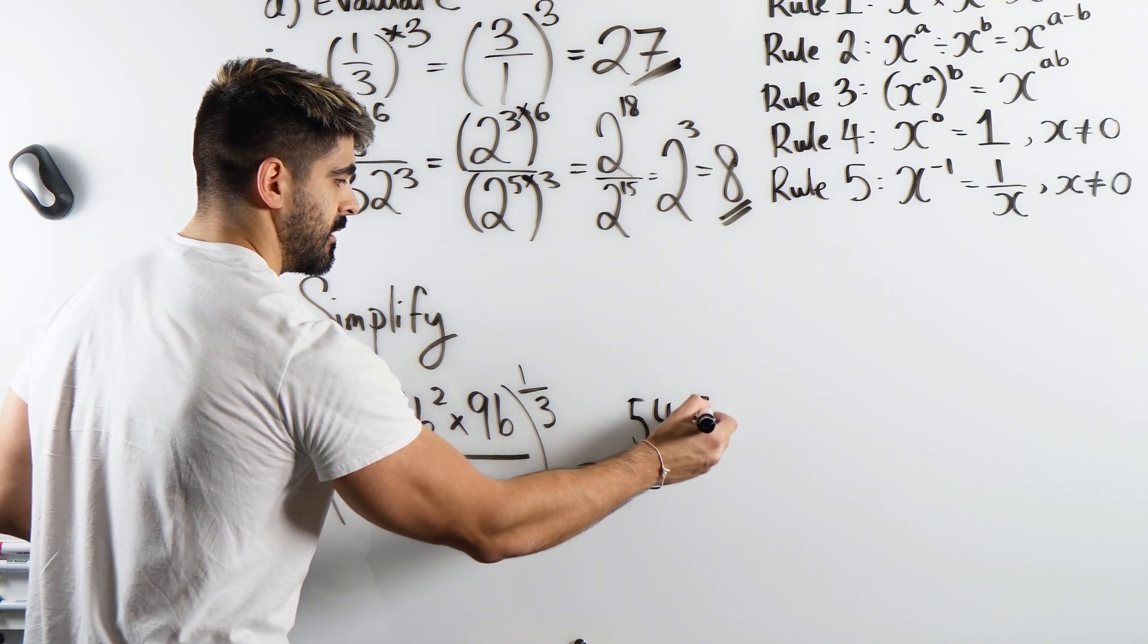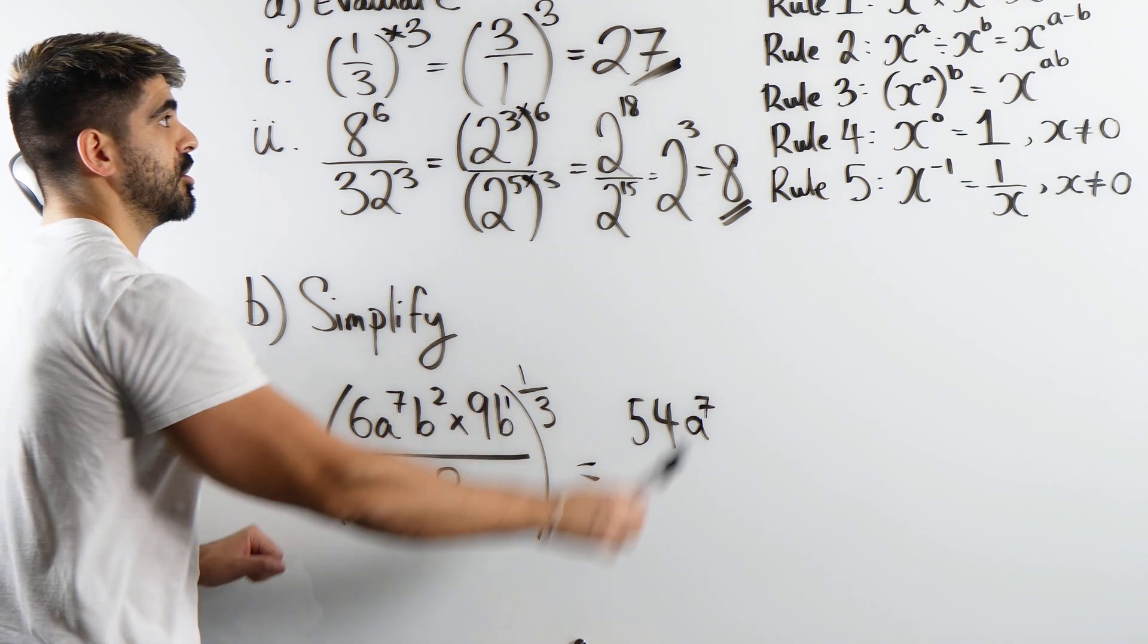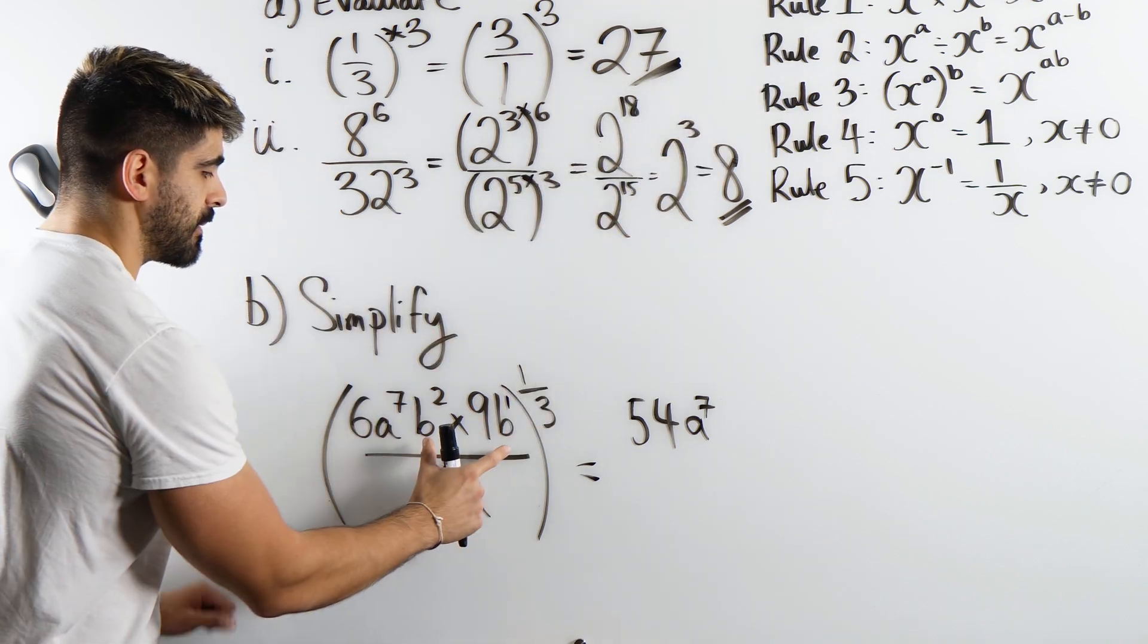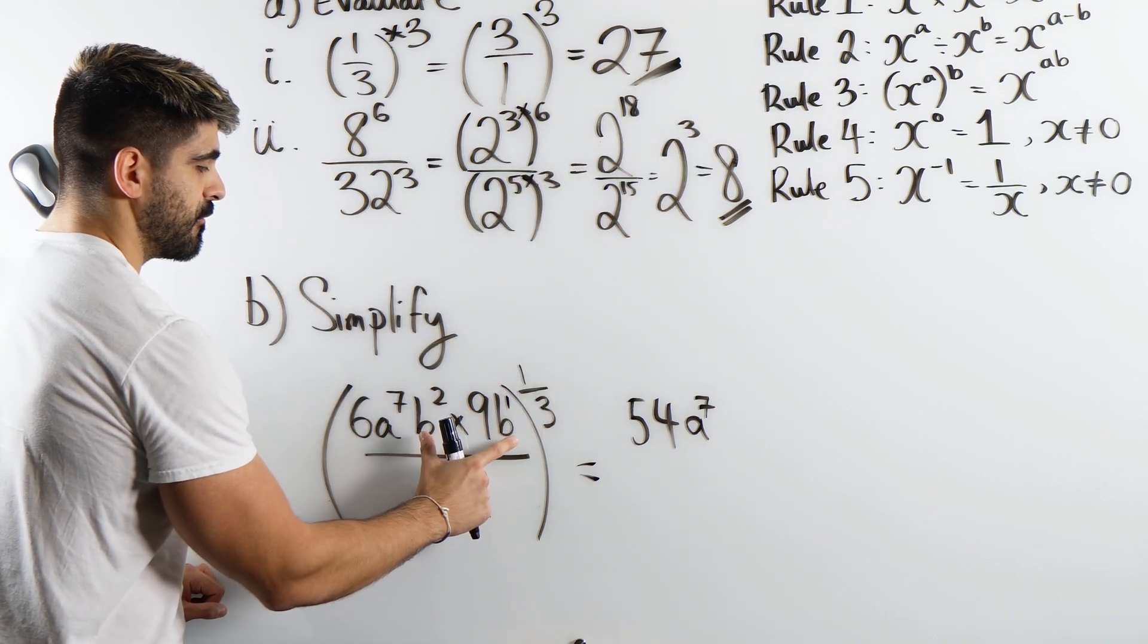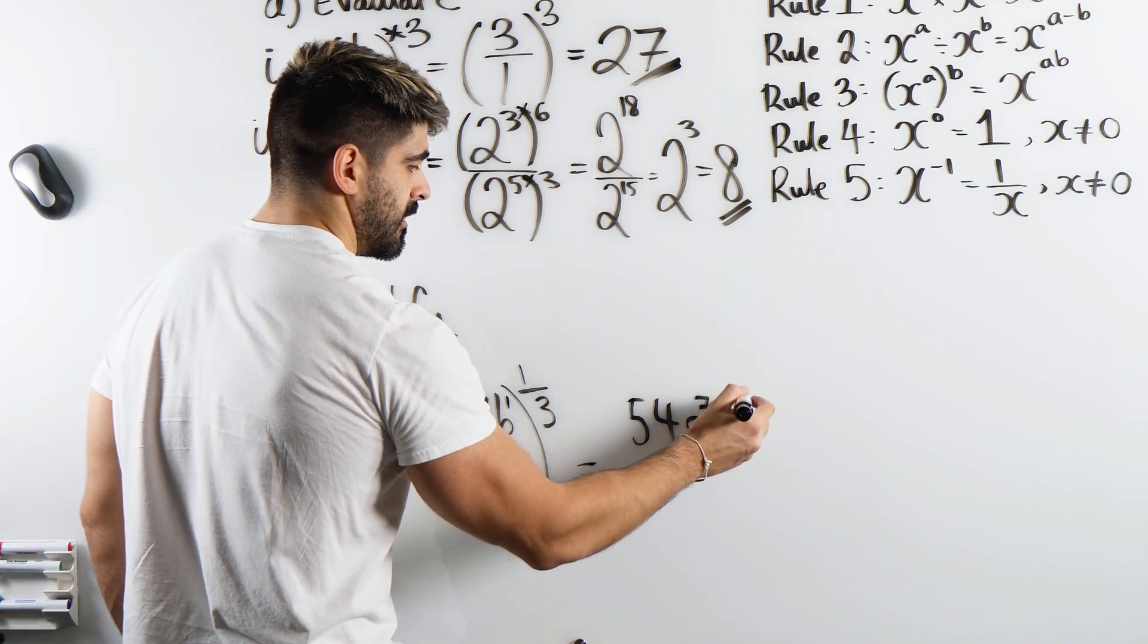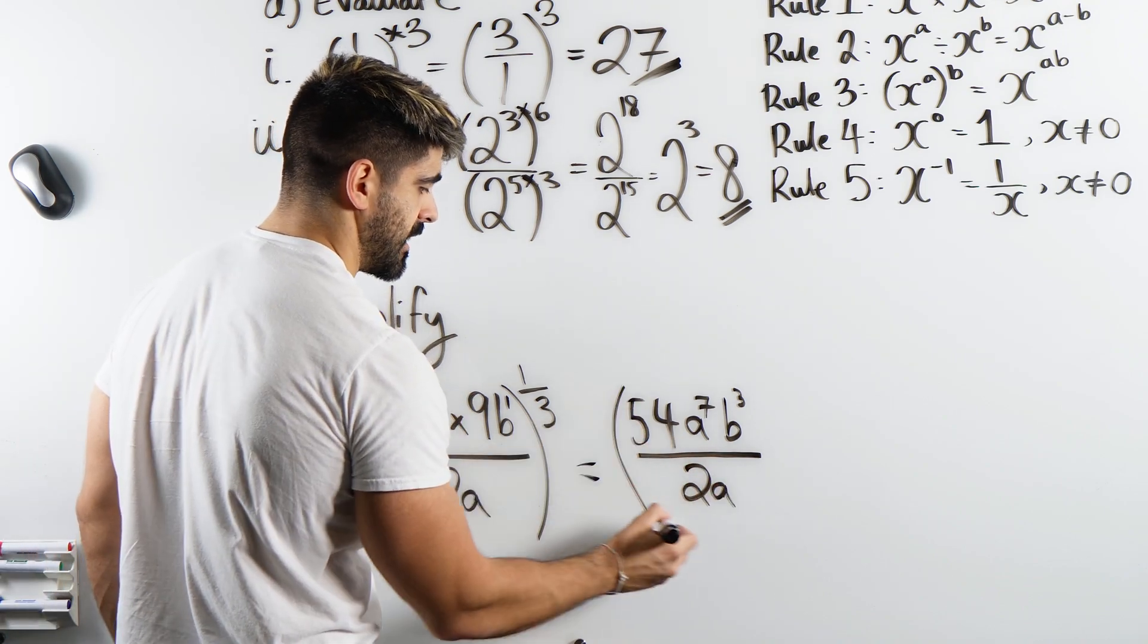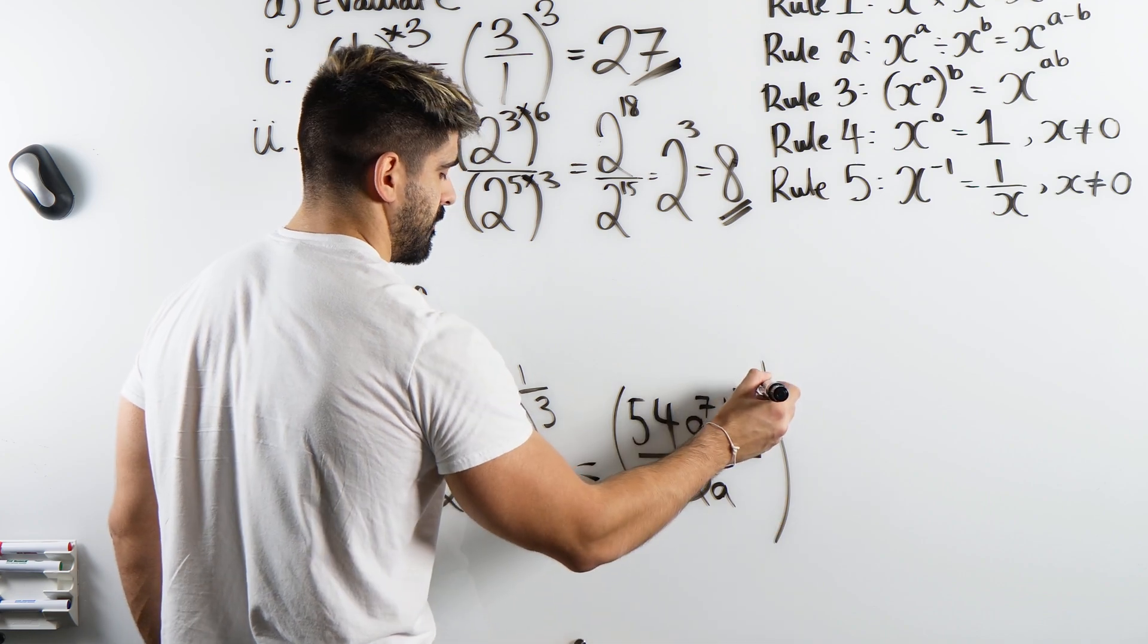Then we have a to the power of 7, but there's no a's over here so we're just left with a to the power of 7. b squared times b, remember that's b to the power of 1. So here we're going to use rule 1. When we are multiplying two numbers with the same base, b for base, we're going to add the powers. 2 plus 1 is 3.